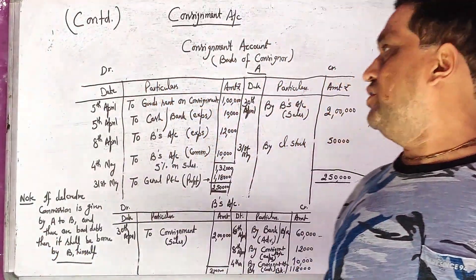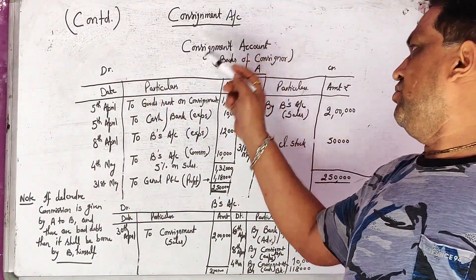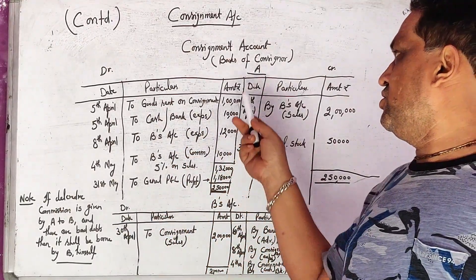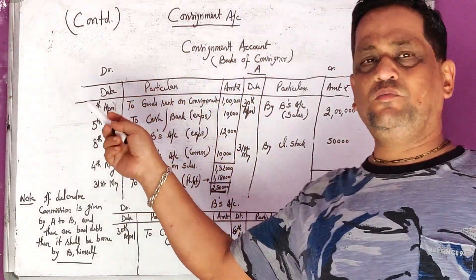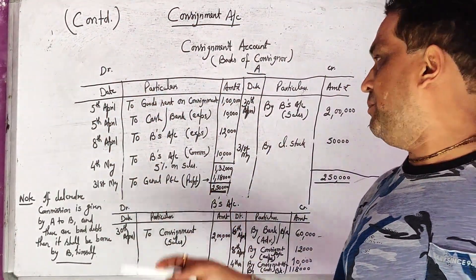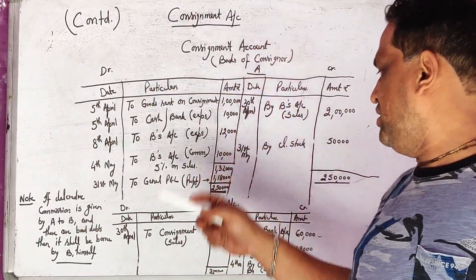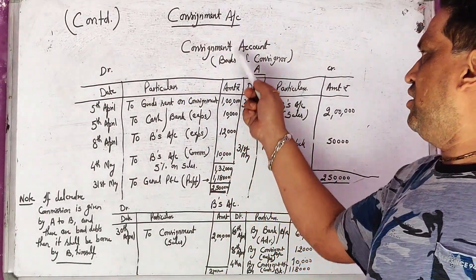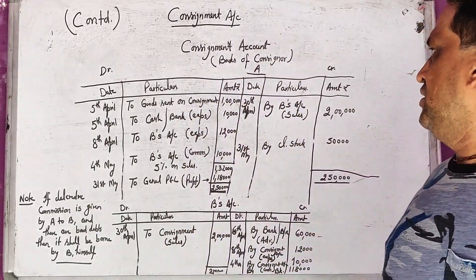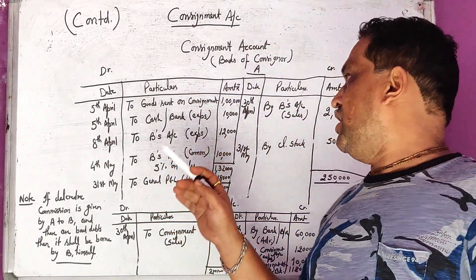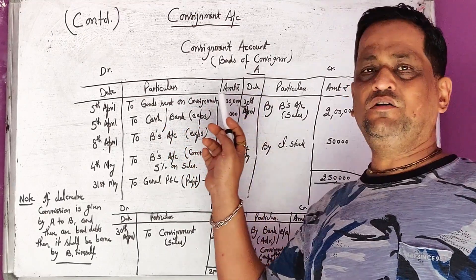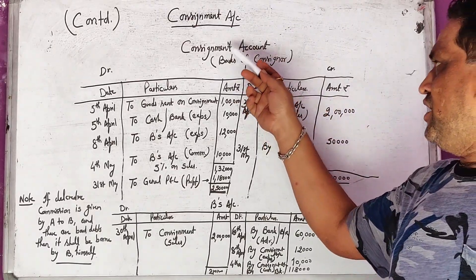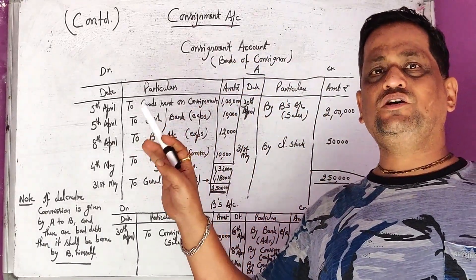We have continued the consignment account and there are a lot of topics to discuss. There are provisions regarding abnormal laws, evaluation of closing stock, preparation of ledger account of consignment, and consignee's accounting in the books of consignor. We have taken some illustrations relating to goods sent on consignment, which is always on cost price, along with sales and journal entries.